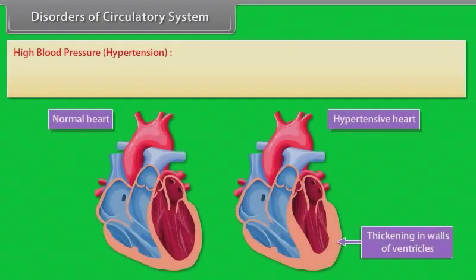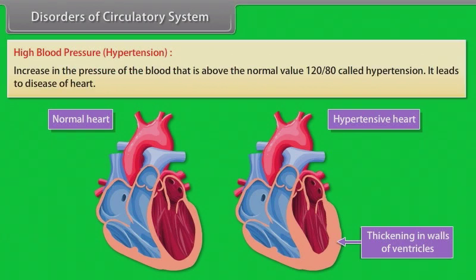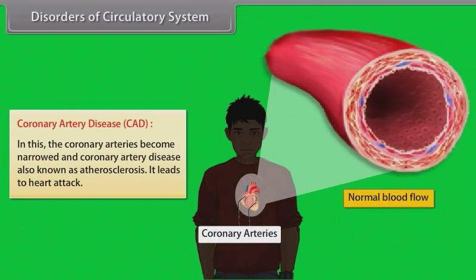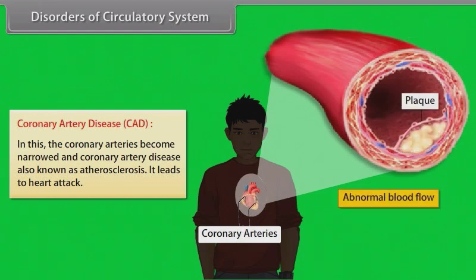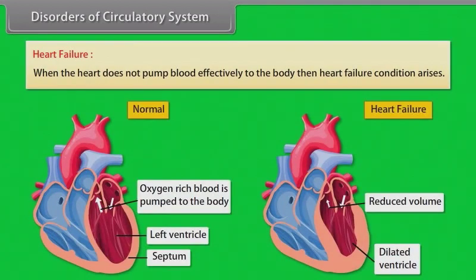Disorders of the circulatory system: High blood pressure, or hypertension, is an increase in blood pressure above the normal value of 120/80, and it leads to heart disease. Coronary artery disease (CAD), also known as atherosclerosis, involves narrowing of the coronary arteries and leads to heart attack. Angina results in chest pain when not enough oxygen is available to the heart. Heart failure occurs when the heart does not pump blood effectively to the body.